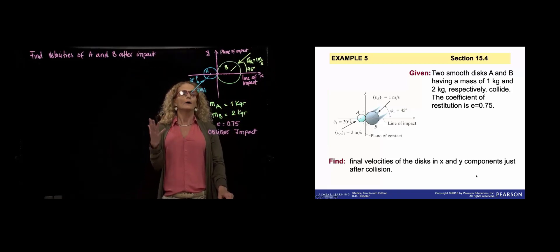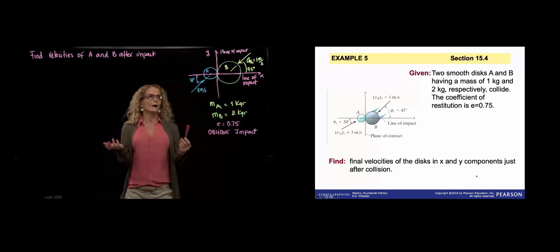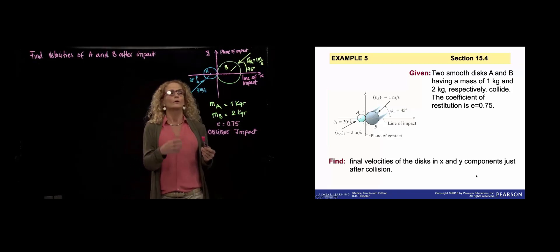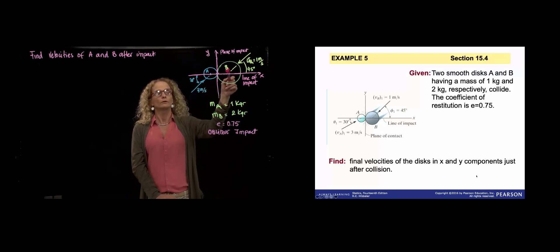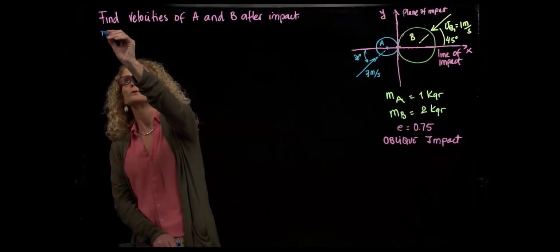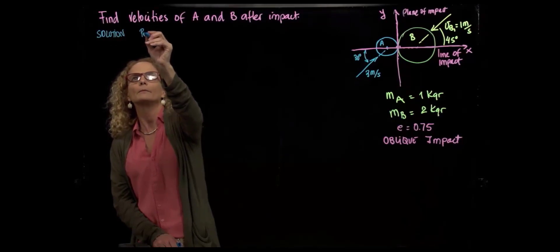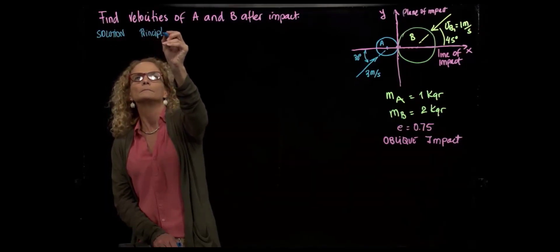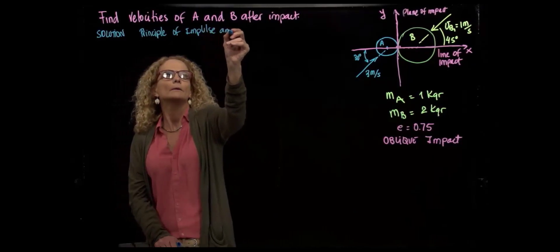How do we find the final velocity? We have X and Y components for the initial velocities of both A and B. Therefore, we will have four unknowns for the final position: velocity of A in X, velocity of A in Y, velocity of B in X, and velocity of B in Y. So we need four equations to solve this problem, using the principle of impulse and momentum.